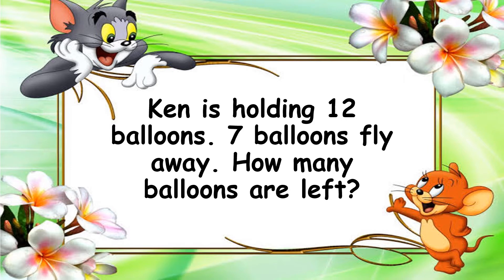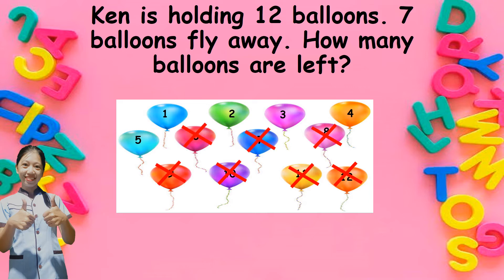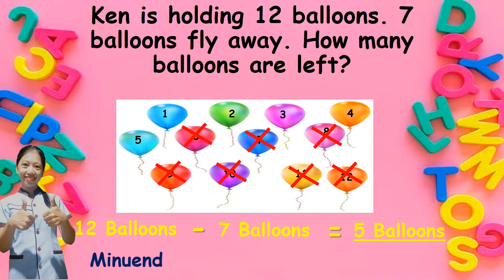So, let us have one more example. Ken is holding twelve balloons and seven balloons fly away. How many balloons are left? So, how many balloons are there in all? Yes, there are twelve balloons. And how many balloons fly away? Seven balloons. So, let us now cross out seven from the twelve balloons. How many balloons were not crossed out? Yes, there are five balloons. So, twelve balloons take away seven balloons is five balloons. Twelve is the minuend, seven is the subtrahend, and five is the difference.